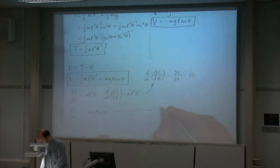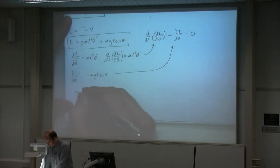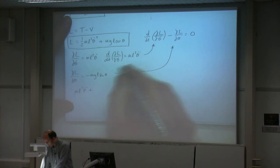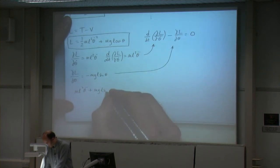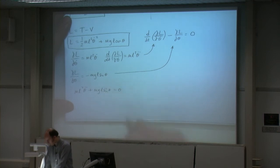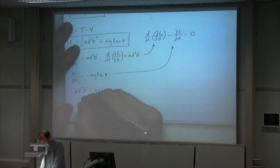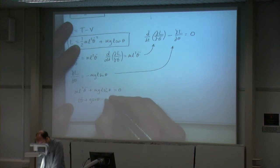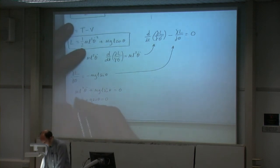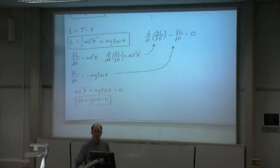Plugging those terms in: mL² theta-double-dot + mgL sine theta = 0. We can divide both sides by mL, so we get L theta-double-dot + g sine theta = 0. And there is the equation of motion for a pendulum. Notice that the mass of the bob is not part of the equation of motion — it doesn't matter what the bob's mass is.